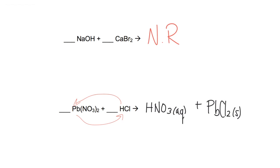Now I just need to balance the equation. There are two chlorides in PbCl₂ but only one chloride on the reactant side, and two nitrates on the reactant side but only one in HNO₃. So I put a 2 in front of HNO₃ — the nitrates are now balanced, but hydrogen is out of balance. I have two hydrogens on the product side and one on the reactant side, and two chlorides needed on the reactant side. Placing a 2 in front of HCl balances everything out.